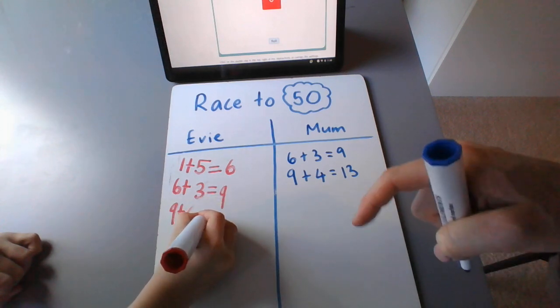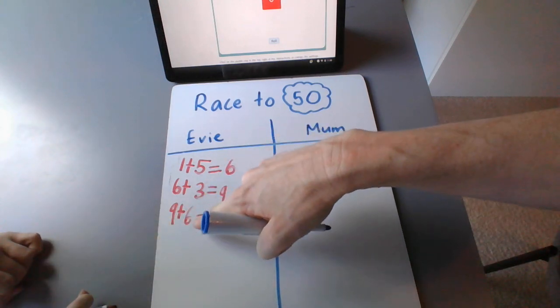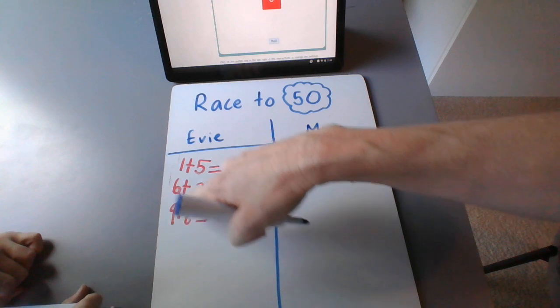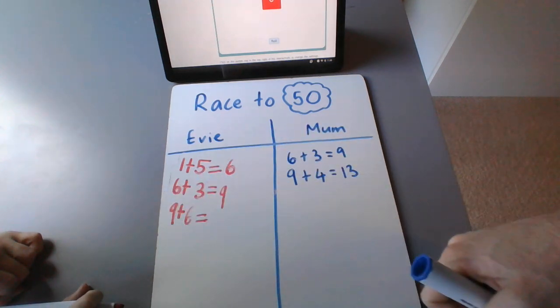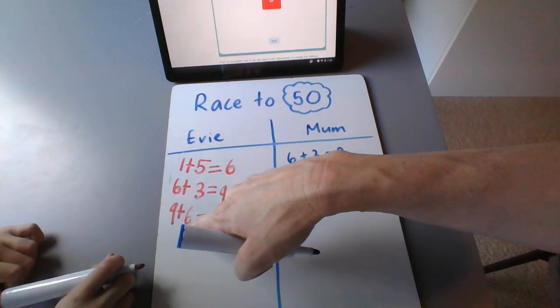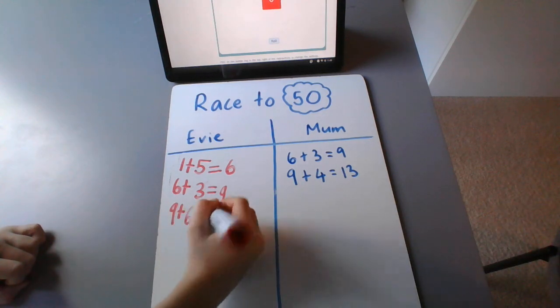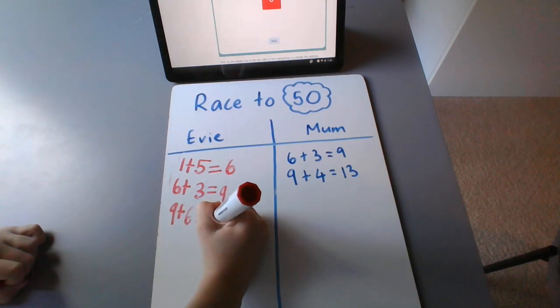Now Evie knows that if she takes one of the ones from the six and puts it with the nine, it'll be 10. And that'll leave that with five. So 10 plus five is 15. Good girl.